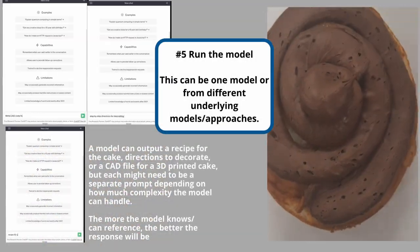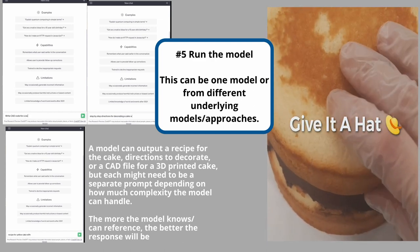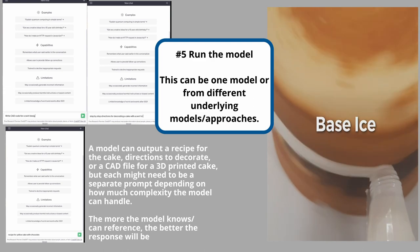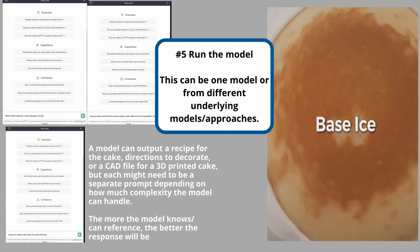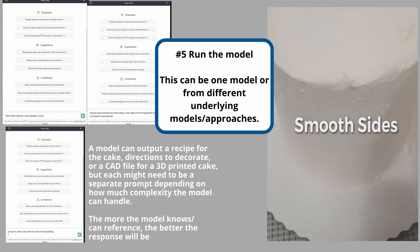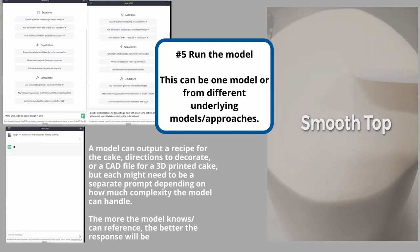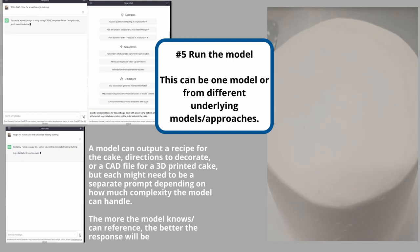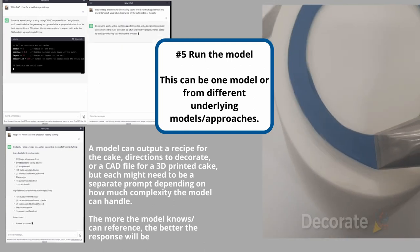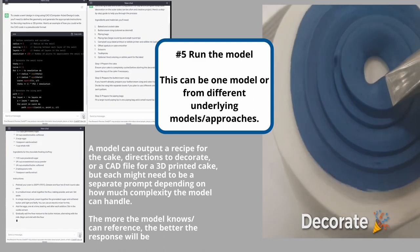Now we're starting to see the models actually run. On my side you can see I have three different models running — these are all from ChatGPT. I used three different prompts in ChatGPT, which at the time of filming was version four. You can see it's starting to run and give me the outputs I'm going to need to be able to create this 3D model.